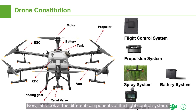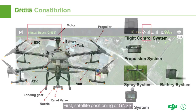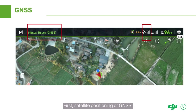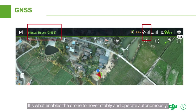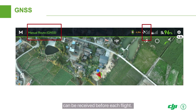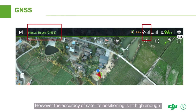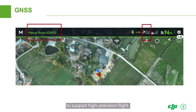Let's look at the different components of the flight control system. First, satellite positioning or GNSS — it's what enables the drone to hover stably and operate autonomously. You must ensure that at least eight satellite signals can be received before each flight. However, the accuracy of satellite positioning isn't high enough to support high-precision flight.